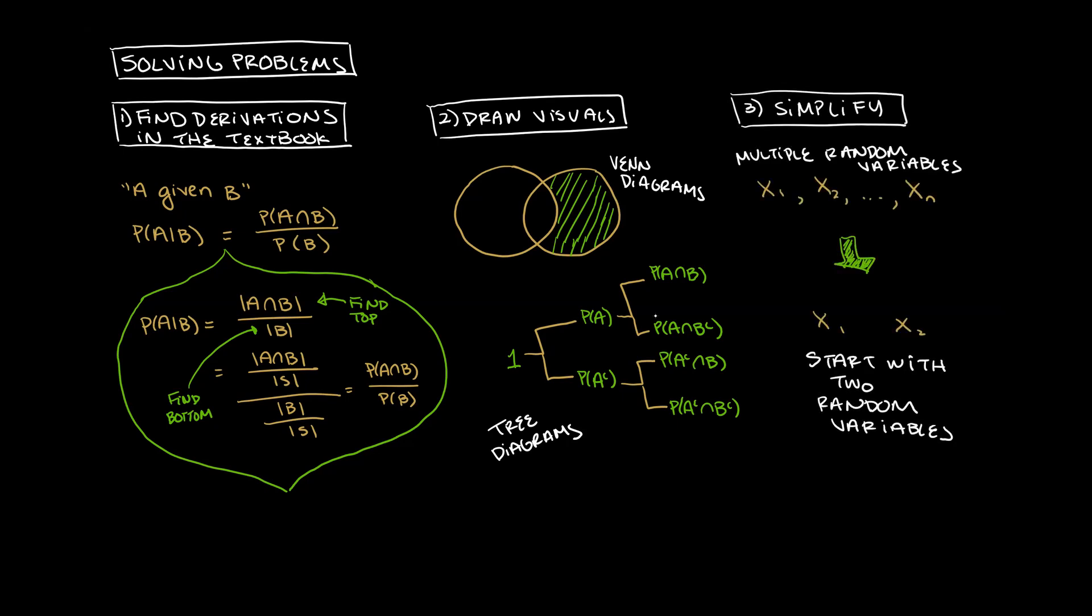If the problem is complex, try to simplify it so that you write out all the steps. For example, if a random experiment entails multiple random variables, try to imagine the same events with just two random variables. Make a more simple example before tackling the complex example.